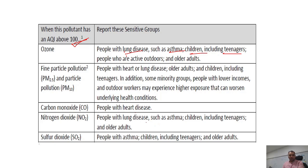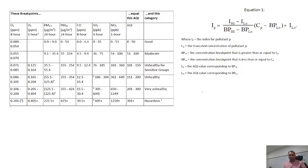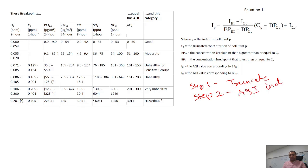Now let us see the steps to calculate the AQI. There is a formula and a table associated with it. Step 1 is to truncate the values as we saw earlier to certain decimal levels. Step 2 is to calculate AQI for individual pollutants. Step 3 is to select the highest value, which is our reported AQI. These are the three simple steps.